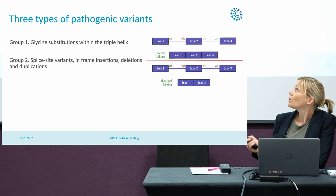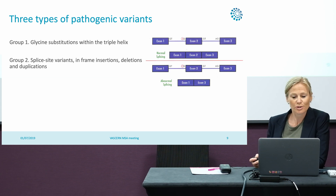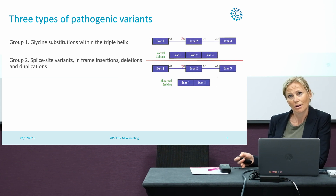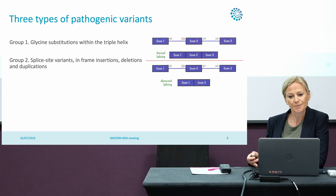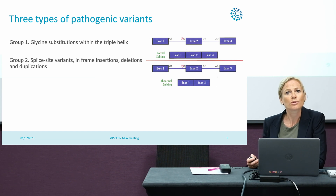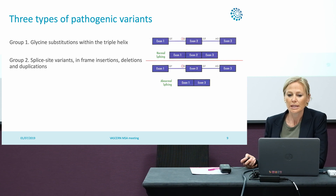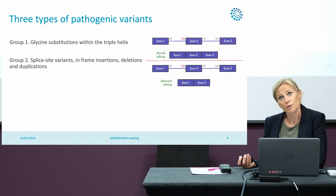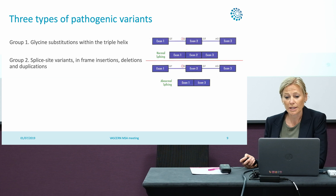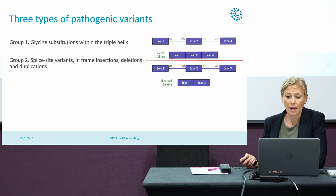Normally we have exons with introns in between. These introns are spliced out during RNA processing and all the exons are put together. If there is a variant in the splice donor or in the splice acceptor site, then there is aberrant splicing.